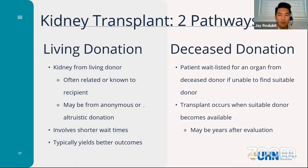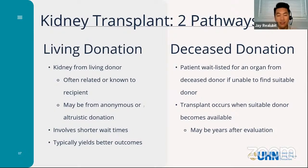Living donor transplant outcomes are really the gold standard and what we try to achieve for the majority of our patients where possible. However, if living donation is not an option, deceased donation is the main way patients will proceed to transplant — patients will be wait-listed for an organ. When a suitable donor becomes available based on matching criteria and wait time data, we'll be able to provide a kidney transplant. This may mean waiting anywhere from about five to seven years depending on a patient's dialysis start date.